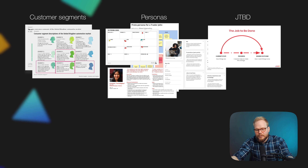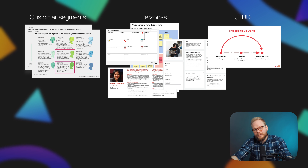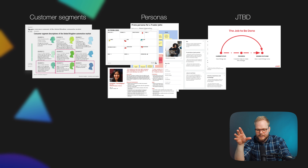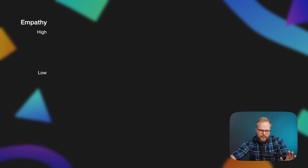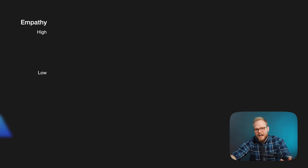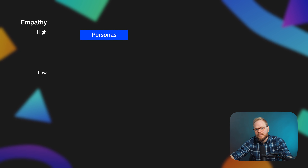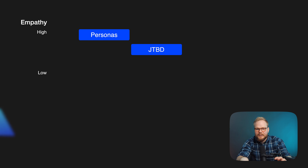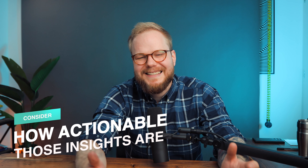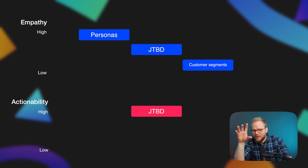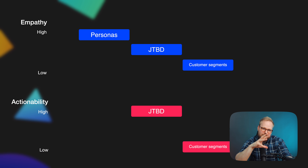So these are the three basic tools you could use to outline who your users are. In any project, you'll probably go through all three. The important bit is to think about this in terms of empathy. On an empathy scale, personas would place very high, jobs to be done somewhere in the middle, and customer segmentation at the low end. But from an actionability perspective — how tangible the insight is — jobs to be done would place the highest, customer segmentation the lowest, and personas somewhere in the middle.